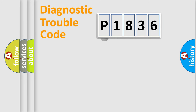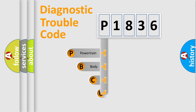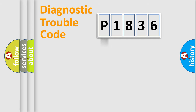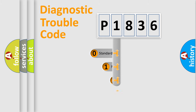First, let's look at the history of diagnostic fault code composition according to the OBD2 protocol. We divide the electric system of an automobile into four basic units: powertrain, body, chassis, and network. This distribution is defined in the first character of the code.